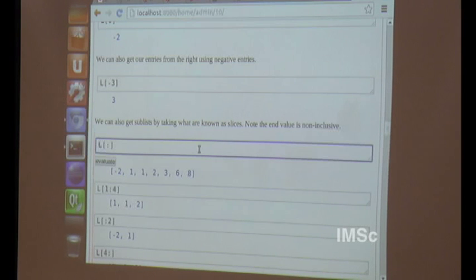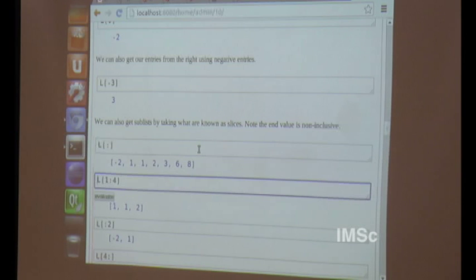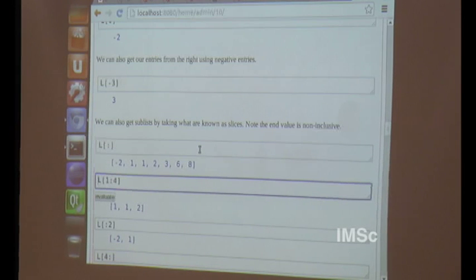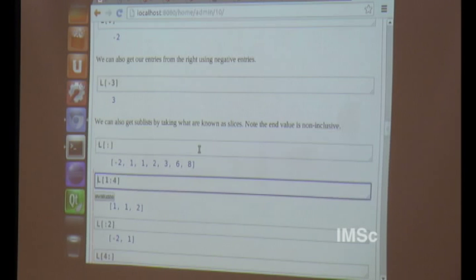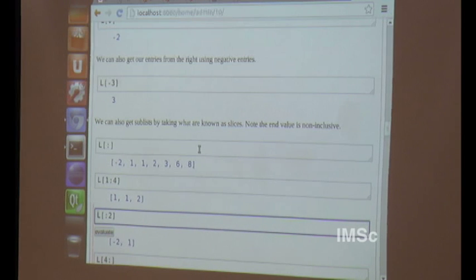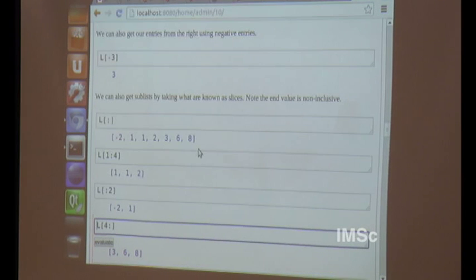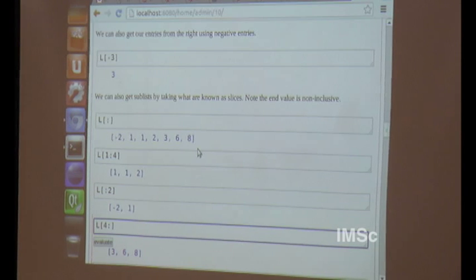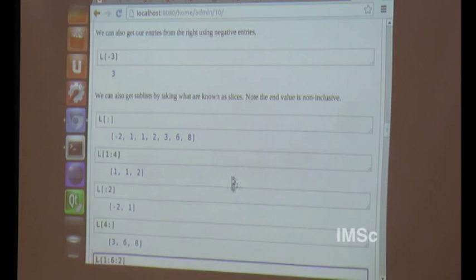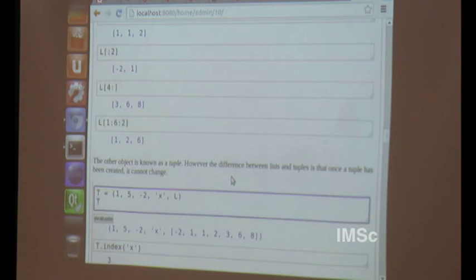We can use negative entries to look at the list from the right, where the rightmost entry corresponds to minus one. So minus three should be three. Then, the next thing we can do with lists is take slices. A quick way to get the slice is basically a sub list. If there's no value to the left of the colon, it gets everything to the left. If nothing to the right, it gets everything to the right. The left side is inclusive, the right side is not, so these are always half open intervals.